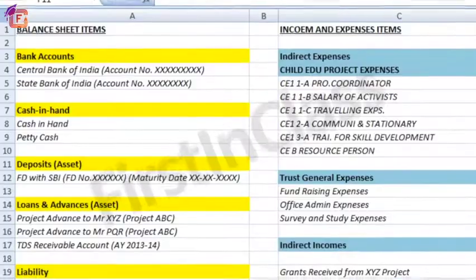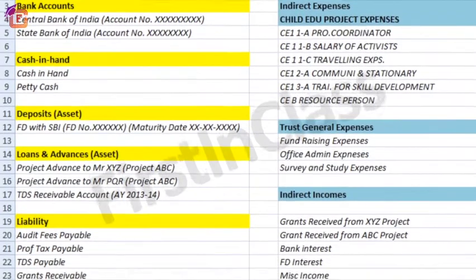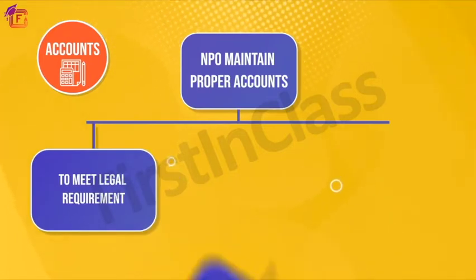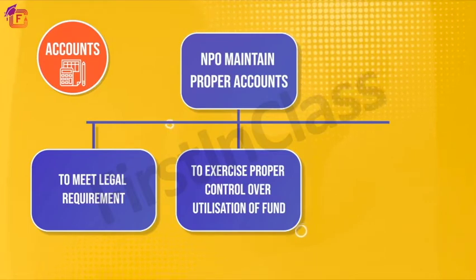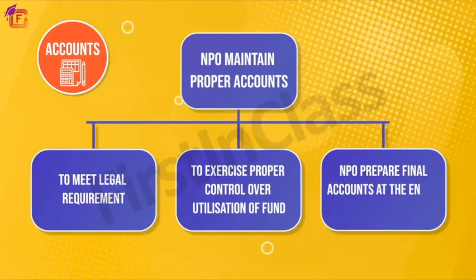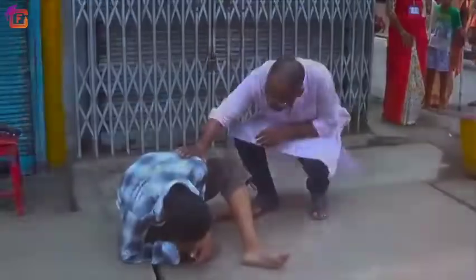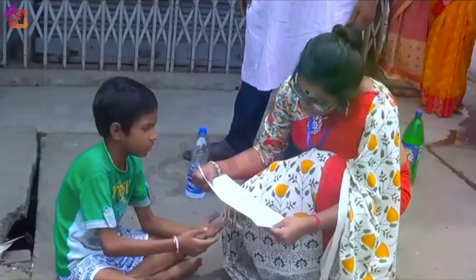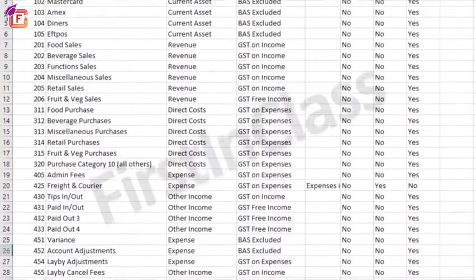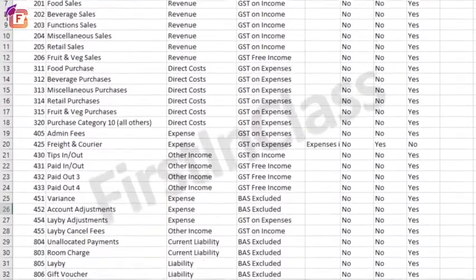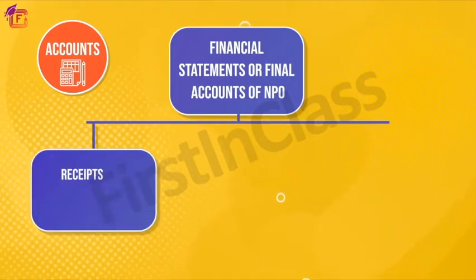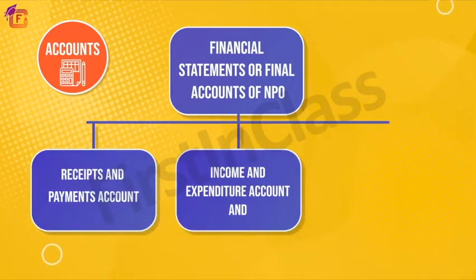The seventh feature is accounts: not-for-profit organizations also have to maintain proper accounts to meet legal requirements and to exercise proper control over the utilization of their funds. Not-for-profit organizations prepare their financial statements more or less on the lines of profit-seeking organizations. They prepare financial statements at the end of each accounting period — financial year. NPOs prepare financial statements like receipts and payments account, income and expenditure account, and balance sheet.